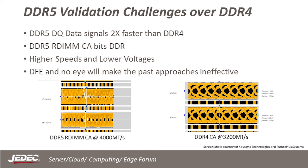Some more challenges for DDR5 validation over DDR4 are double data rate CA bits, higher speeds, lower voltages, and no eye at the traditional probe point, which on DDR4 was the DIMM/SODIMM slot. On this slide you see a DDR5 logic analyzer eye scan for a DDR5 RDIMM system at 4,000 megatransfers per second, and also a DDR4 at 3,200 megatransfers per second. You will notice that the eyes on the DDR5 system are almost closed. Since the logic analyzer does not have DFE, a closed eye will result in unreliable acquisition.